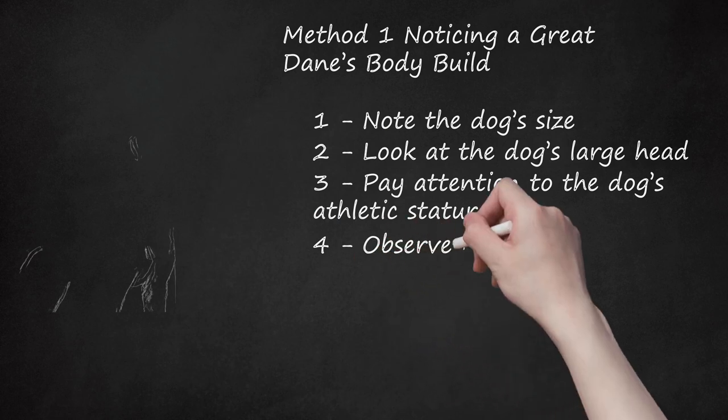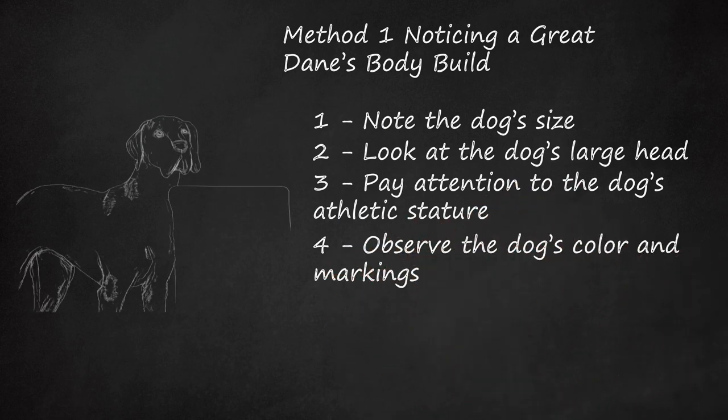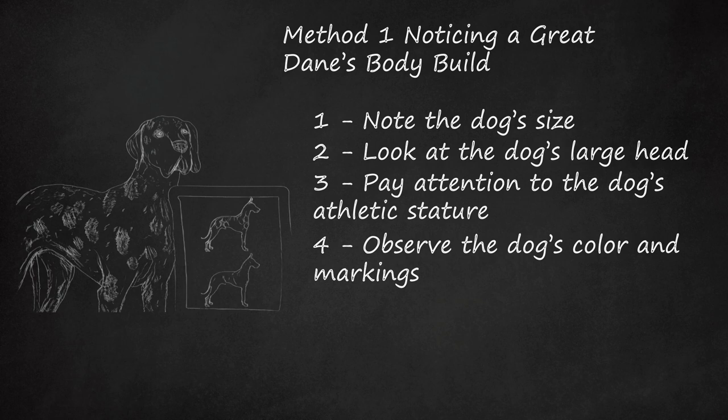Observe the dog's color and markings. A Great Dane has a short, glossy coat that comes in a variety of colors and patterns. The American Kennel Club recognizes nine colors and three patterns. Great Danes have black or white markings throughout their coat, or you may observe that they have a black mask across their face.